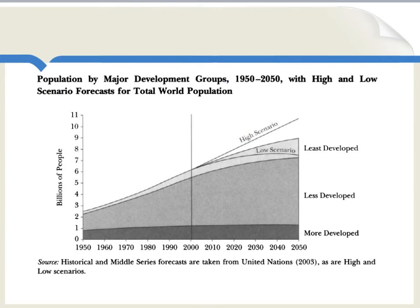One point worth noting is that a lot of demographic projections and predictions about population are not always exact. A lot of these pictures have shown you what people think is likely to happen in the future, but there's variance on those forecasts. For global population, there is a low scenario, a middling scenario, and a high scenario. Looking out to 2050, the low scenario has somewhere between 6 and 7 billion people, and the high scenario has about 10 billion — a difference of 3 billion. When predictions are made about demographics, population, life expectancy, and fertility, sometimes we simply get it wrong.